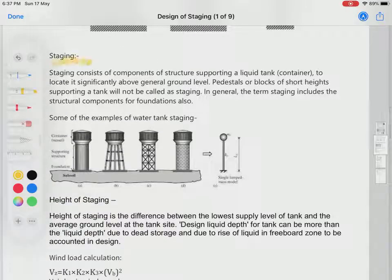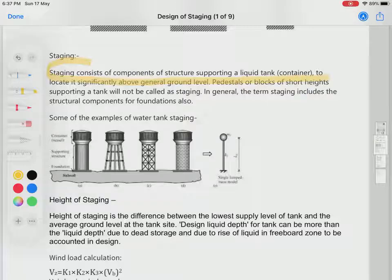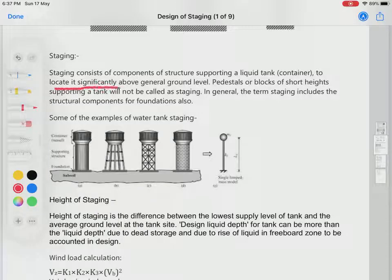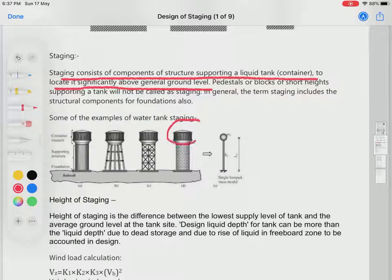Here's the definition of staging: Staging consists of components of a structure supporting a liquid tank container to locate it significantly above ground level. This is the general definition—we are supporting a water retaining liquid tank above general ground level.